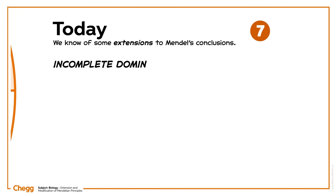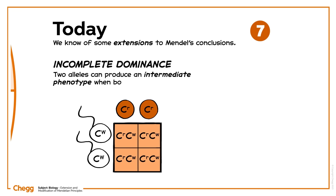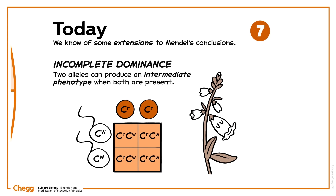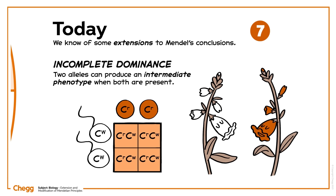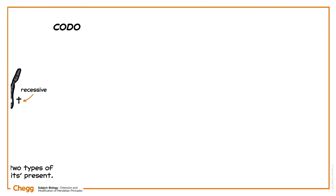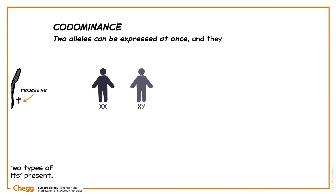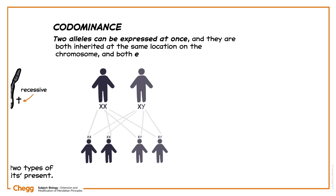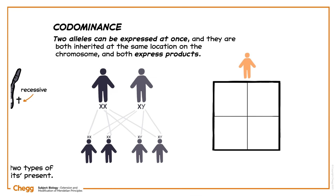Today we know of some extensions to Mendel's conclusions. Firstly, we know about incomplete dominance. Two alleles can produce an intermediate phenotype when both are present, so it is not always the case that one is fully dominant over the other. For example, a cross between a snapdragon parent homozygous for red flowers, CRCR, and a parent homozygous for white flowers, CWCW, will produce pink-flowered offspring with genotype CRCW. Secondly, we've discovered codominance. Two alleles can be expressed at once; they are both inherited at the same location on the chromosome and both express products. This can happen in the inheritance of blood groups — a child can be born with the AB blood type if they inherit an A allele from one parent and a B allele from another.